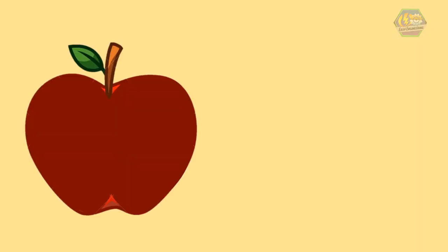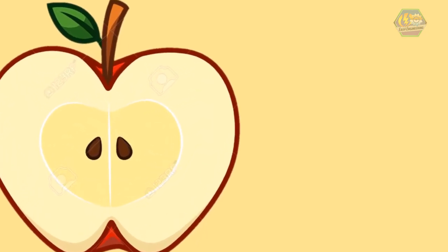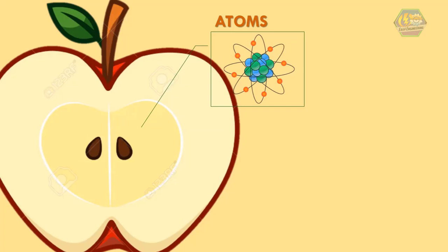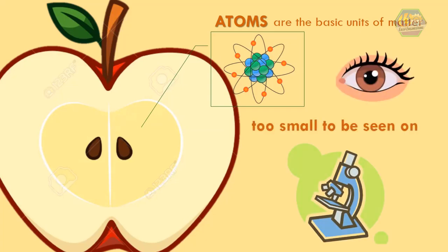Let us have another example — let us consider an apple. If we get closer and closer to the smallest parts of the apple, we can see atoms. Atoms are what matter is made up of. Unfortunately, atoms are too small to be seen by our naked eye, or even a microscope.